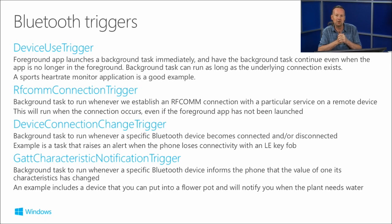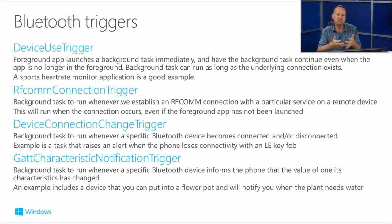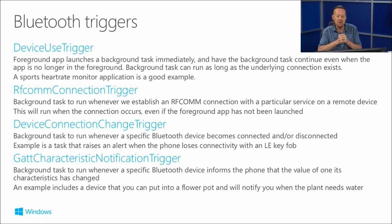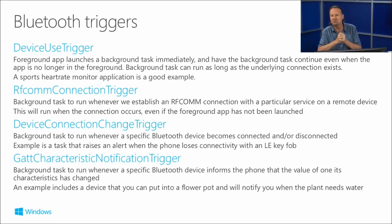RFComm connection trigger is similar - for an RFComm device the foreground app establishes the connection, and then even after the foreground app has suspended, the background task which is on an RFComm connection trigger will carry on maintaining that connection with that RFComm device. The other two are more traditional triggers. A device connection change trigger - this is when a Bluetooth device becomes connected or disconnected. This will fire up a background task and is the one which will raise an alert when you've left your keys behind or something like that.